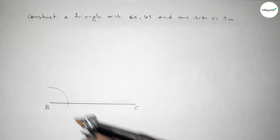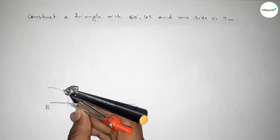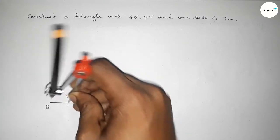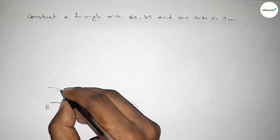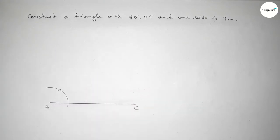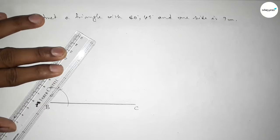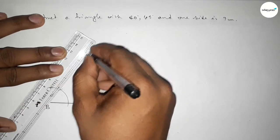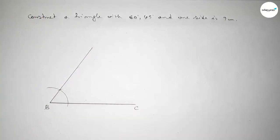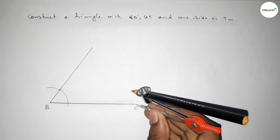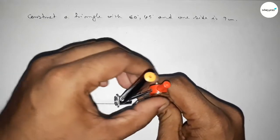Putting the compass here with the same length and cutting here, so both the curves intersect at a point. Now joining this to get a 60 degree angle. Now drawing a 45 degree angle at point C, so putting the compass here and drawing an arc.